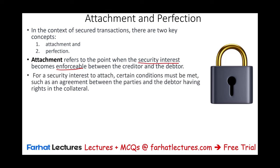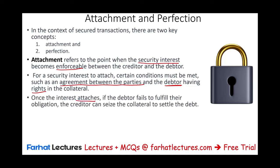For a security interest to attach, certain conditions must be met. There must be an agreement between the creditor and the debtor, and the debtor must have rights in the collateral. They cannot give the creditor a right in their neighbor's laptop — they must give a security interest in their own property that they actually own or control. Once the interest attaches, if the debtor fails to fulfill their obligation, the creditor can seize the collateral to settle the debt.